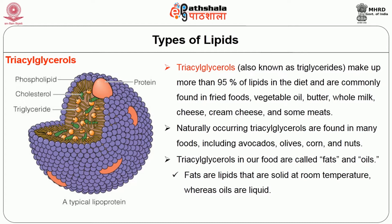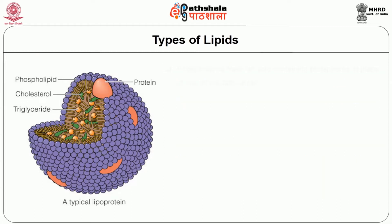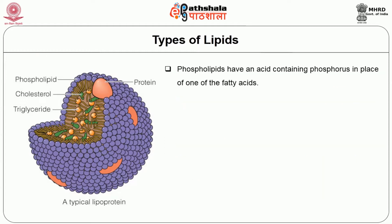Triacylglycerols make up 95% of lipids in the diet. They are commonly found in fried foods, vegetable oil, butter, whole milk, cheese, cream cheese, and some meat. The naturally occurring triacylglycerols are found in many foods. If they are solid and saturated we call them fats; if unsaturated and liquid at room temperature, we call them oils.